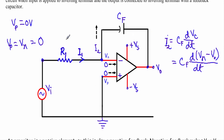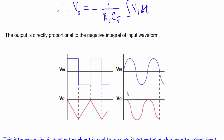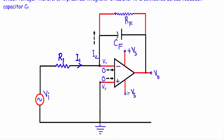If we use this configuration as an operational amplifier integrator, even at a very small offset voltage, the output will saturate quickly. To avoid this unwanted saturation, we use a feedback resistor RF in parallel with the feedback capacitor CF. Our practical operational amplifier integrator circuit will look like this circuit.